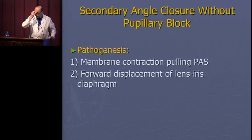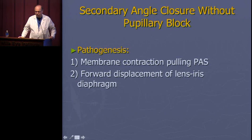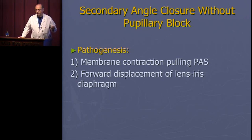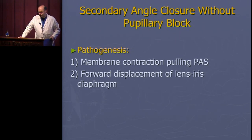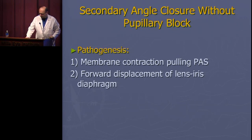Without a pupillary block, we'll go through some causes, including membrane contractures pulling the iris up against the angle, and anterior displacement of the lens-iris diaphragm for a variety of reasons.